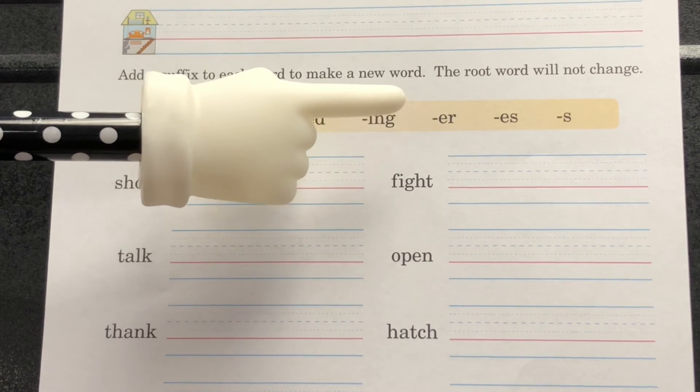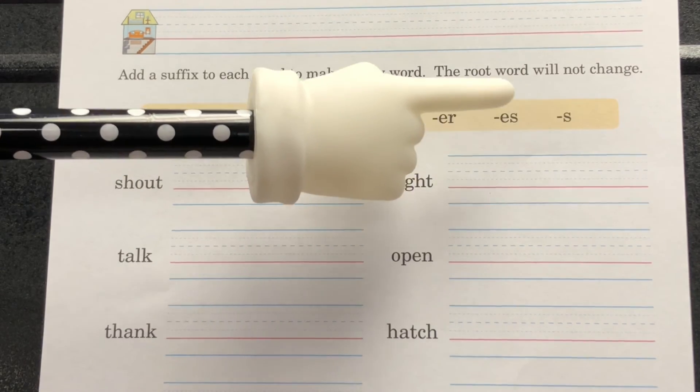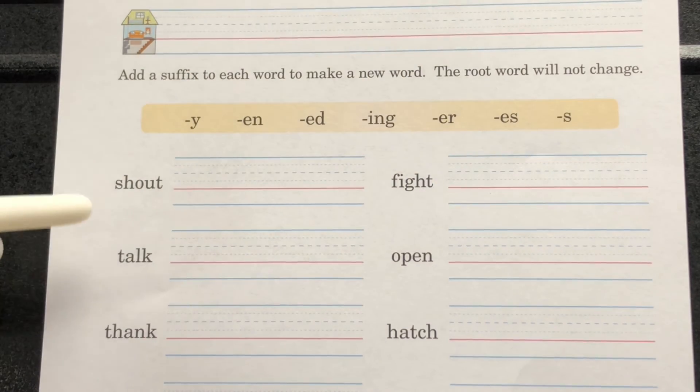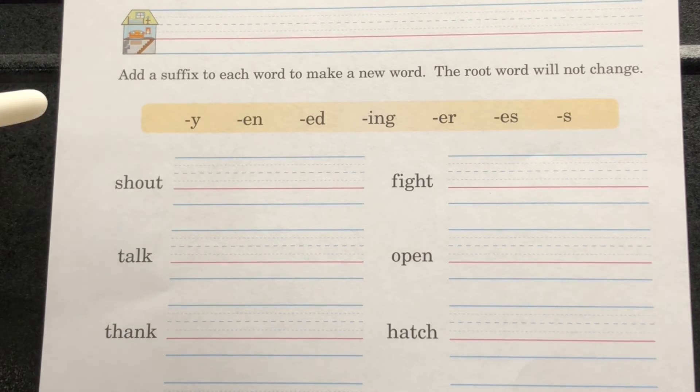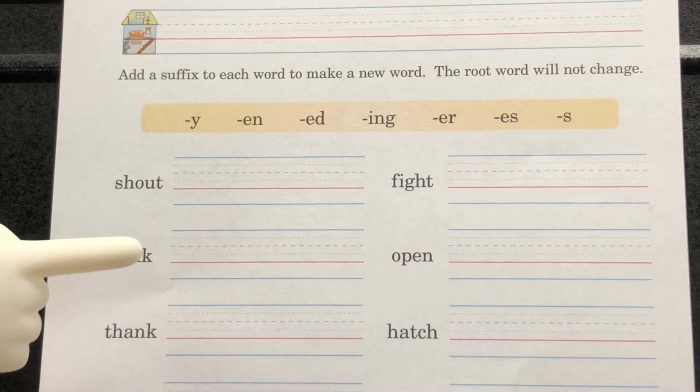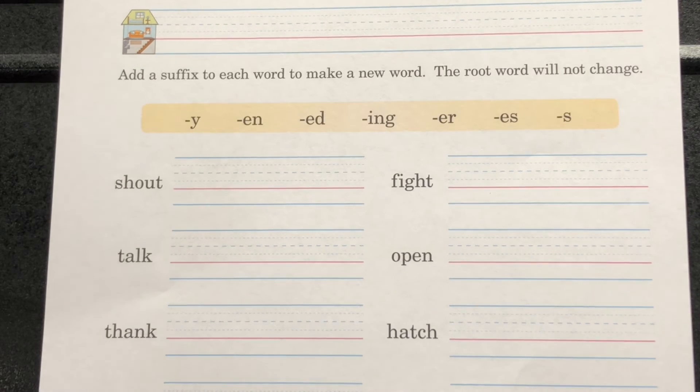ING in pointing, ER in bigger, S in peaches, and the S. You're going to add the suffixes to the root word. Remember our suffix rules.